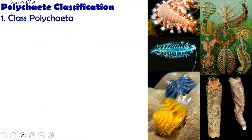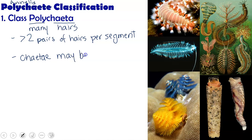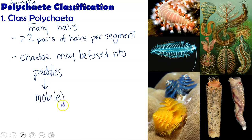Our first group is class Polychaeta. In this word, 'poly' means many and 'chaeta' means hairs. So these have many hairs — defined as more than two pairs of hairs per segment. These setae may be fused to make paddles, which are used by the mobile worms, like these fireworms right here.